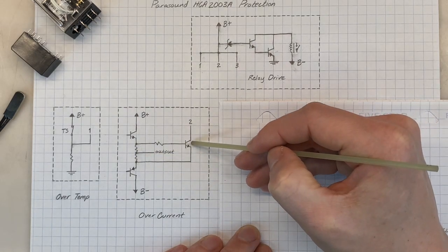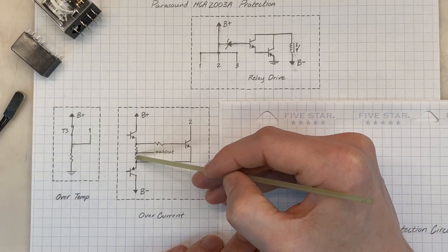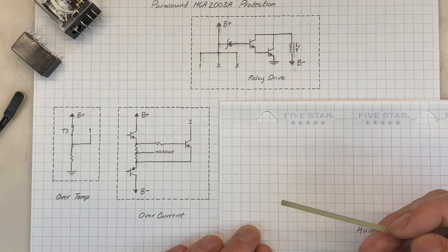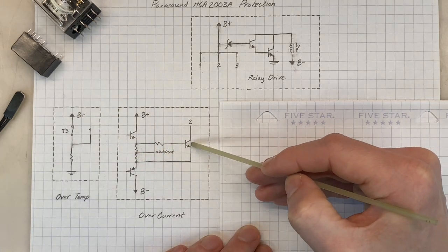The function of this transistor is to monitor the current through and thus the voltage across the two emitter resistors. Under normal conditions, the current through these resistors will be low enough such that this transistor will be off.